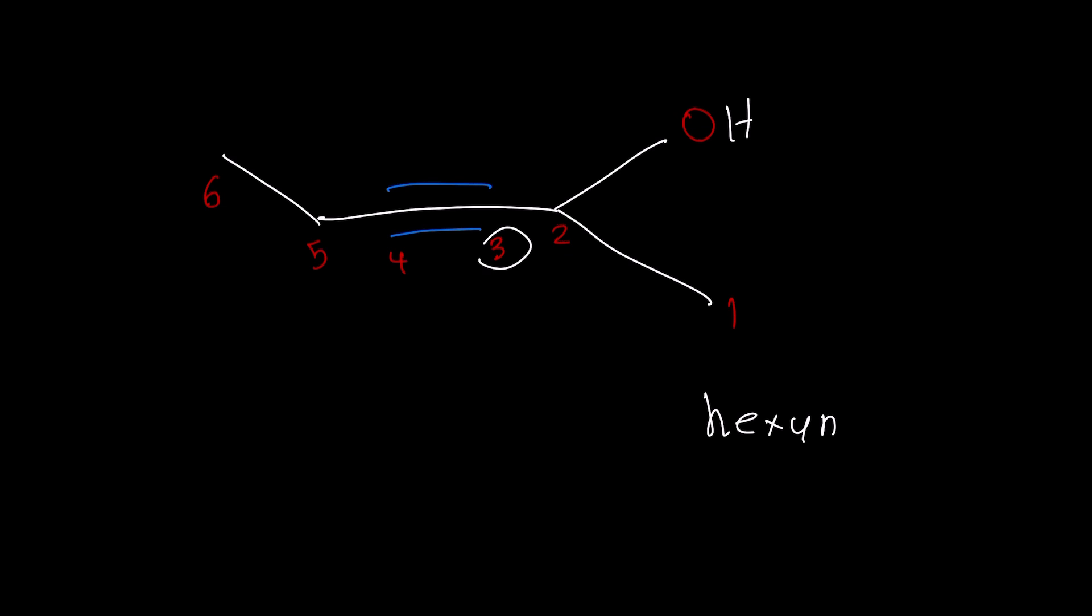And it's across three and four, but we're going to pick the lower number, three. So three hexyne. And the hydroxy group is on carbon number two, which would be two ol. So three hexyne, two ol.